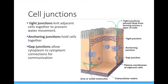Most cells don't work by themselves — they must attach and communicate with the cells around them. Three types of cell junctions are common in animal cells. Tight junctions bind adjacent cells closely together in a water-tight barrier. This helps prevent the movement of fluid in the body so we don't get fluid buildups where we don't want them.